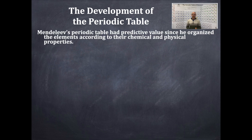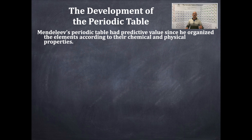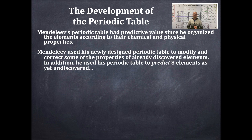Mendeleev's periodic table had predictive value — that's a key word. He organized elements according to their chemical and physical properties and molar masses. Prior to that, others were designing periodic tables based on things like musical octaves on a piano — completely wrong. He also used his table to modify and correct some already-discovered elemental properties.